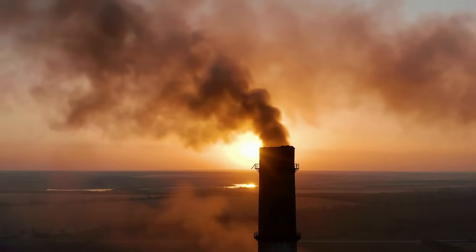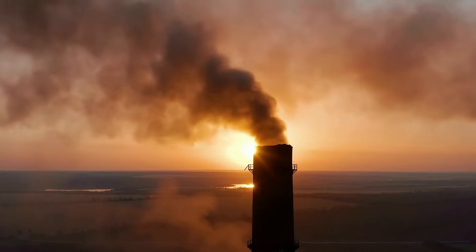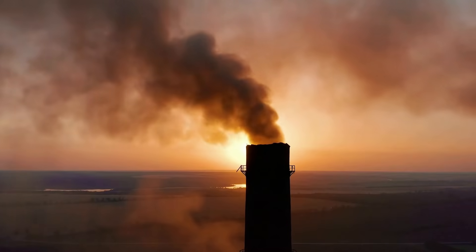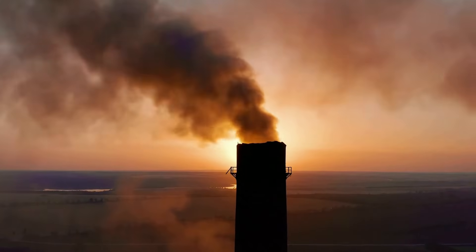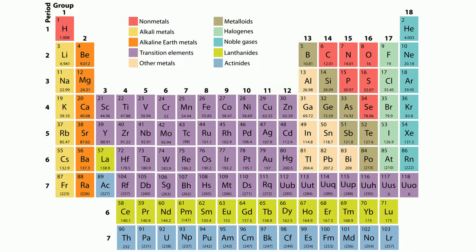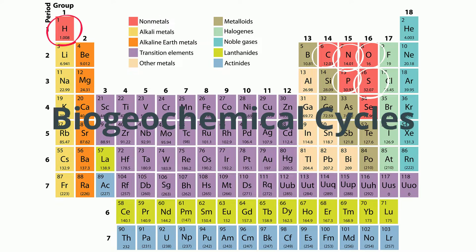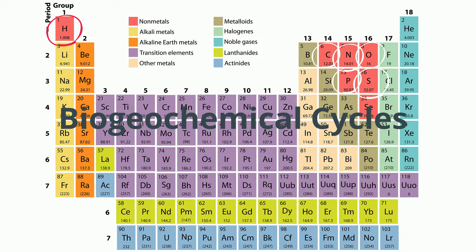Unlike energy that is lost as heat, the six most common elements in organic molecules — carbon, nitrogen, hydrogen, oxygen, phosphorus, and sulfur — are conserved in biogeochemical cycles.